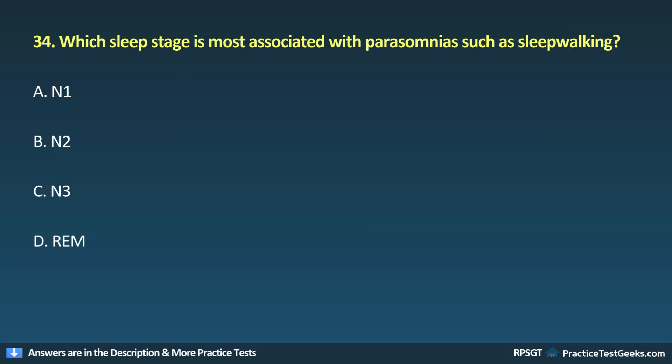Question 34: Which sleep stage is most associated with parasomnias such as sleepwalking? A. N1, B. N2, C. N3, D. REM.